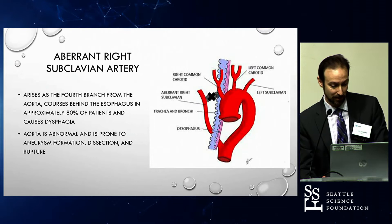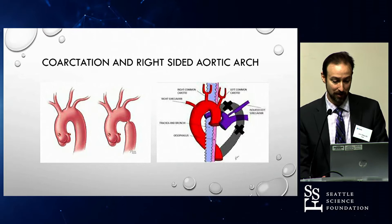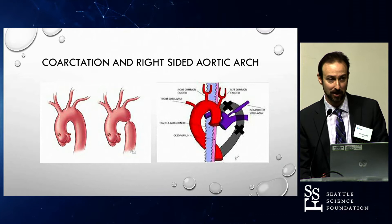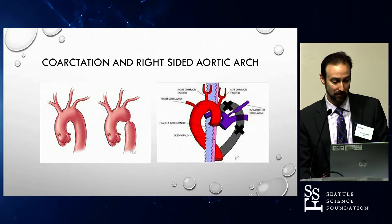Coarctation, I think most people are familiar with. These people are prone to aneurysmal disease, and even after correction — most are found in childhood — in adults they have to be followed for life because of problems related to post-repair complications.